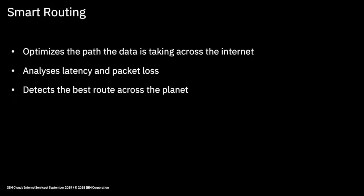Smart routing is a feature that allows you to optimise the path data takes across the internet. When you turn it on, the service analyses latency and packet loss as data travels across the internet and detects the best route for your data across the planet. This is a way to make sure your data is served quickly via the optimal route, effectively reducing latency for your users.